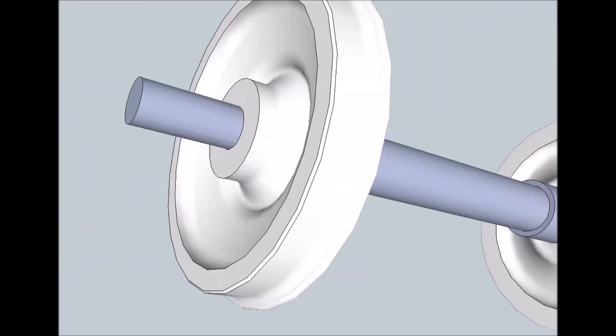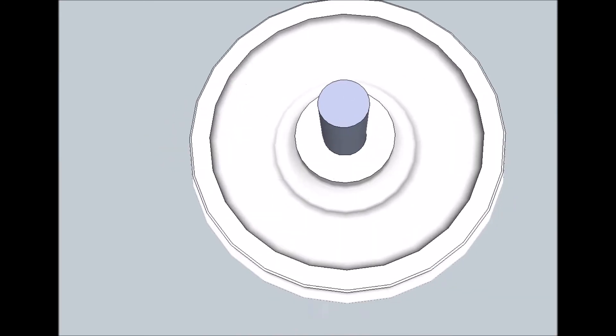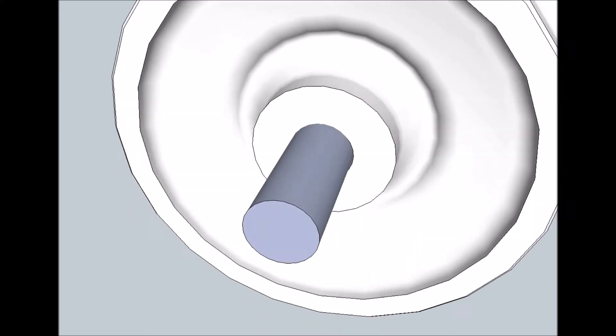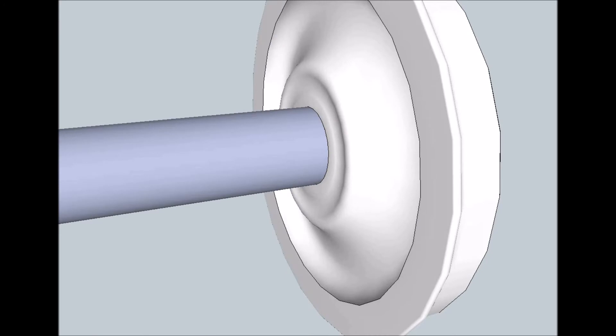All wheel profiles must be regularly checked to ensure proper interaction between the wheel and the rail. Incorrectly trued or worn out wheels increase rolling resistance, reduce energy efficiency and may even cause a derailment.